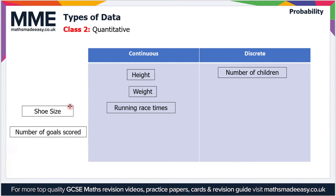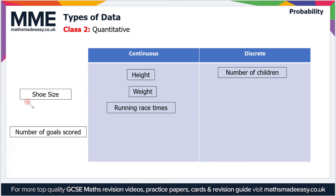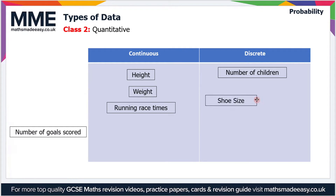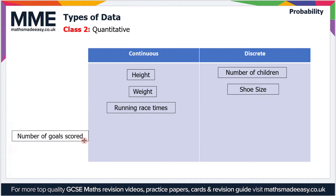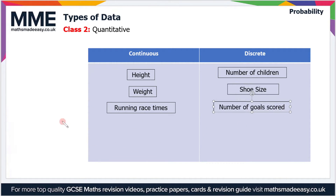Shoe size is the next example. Shoe size increments go up in 0.5 — so 4.5, 5, 5.5, and so on. But the increments are fixed, meaning you can only have fixed values, so shoe size is discrete. Similarly, number of goals scored is discrete, because you can't score half a goal in a game of football.